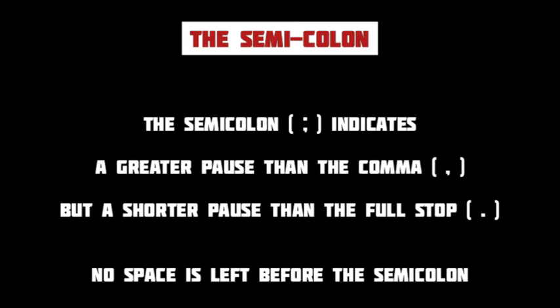The semicolon has the symbol of a dot and a comma under it. As a punctuation mark, the semicolon indicates a greater pause than the comma but a smaller pause than the full stop. In other words, a semicolon represents a more important pause than a comma in a sentence. Also remember that no space is given before the semicolon — it comes right after the letter.